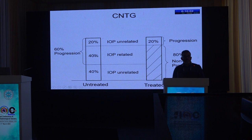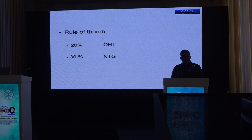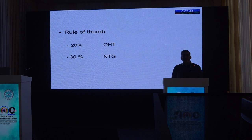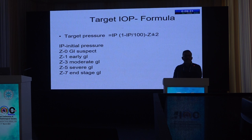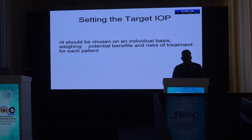IOP must be lowered to prevent blindness. The OHTS recommended a 20% IOP reduction; the NTG study showed benefit from 30% reduction. However, these guidelines alone are not enough — we cannot brand everyone as OHT or NTG and apply fixed percentage reductions. Some target IOP formulas have been proposed, but they are not very practical. Therefore, how much to lower IOP must be individualized for each patient, weighing potential benefits and risks of treatment.